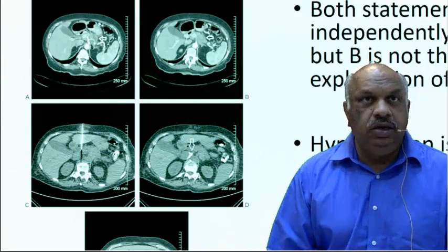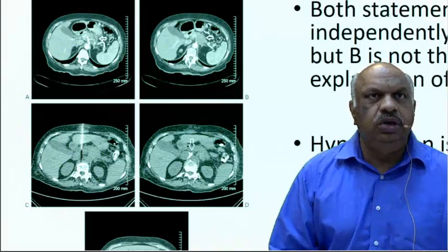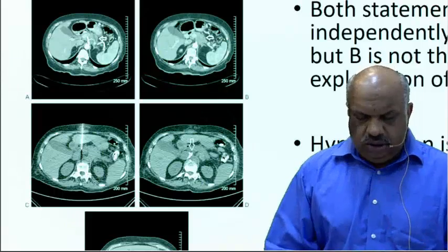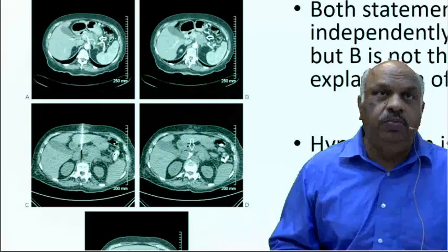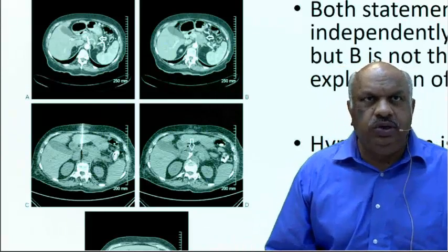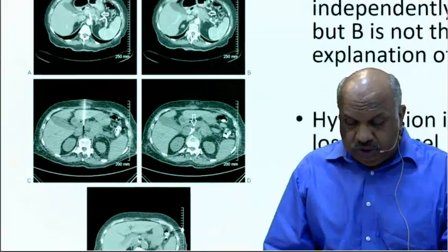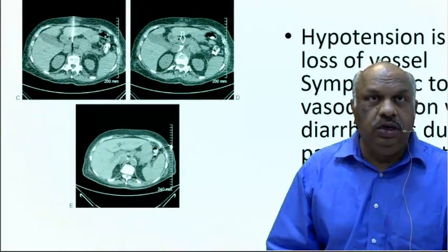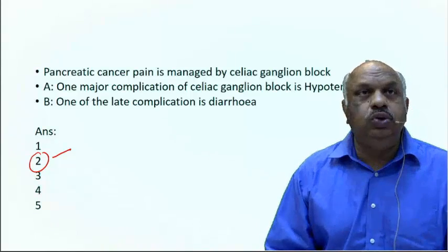This figure shows a celiac ganglion block being done from the anterior approach. The anterior approach is more preferred — it is done in the supine position, which is more comfortable for both patient and doctor. The posterior approach is an oblique approach that has a slightly higher risk of chylothorax, though it is safe. People prefer the anterior approach for comfort.